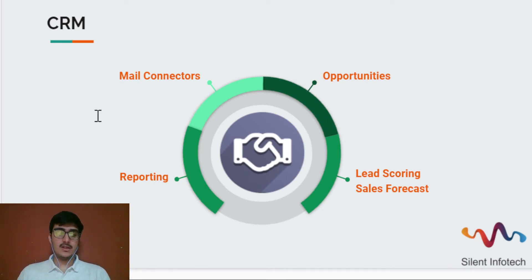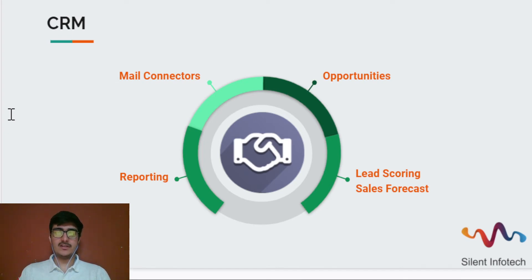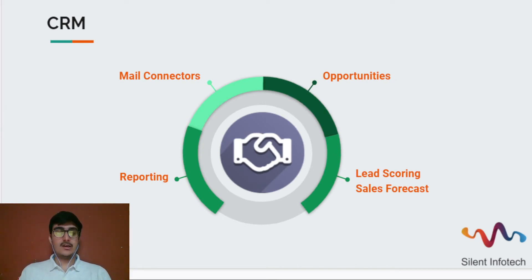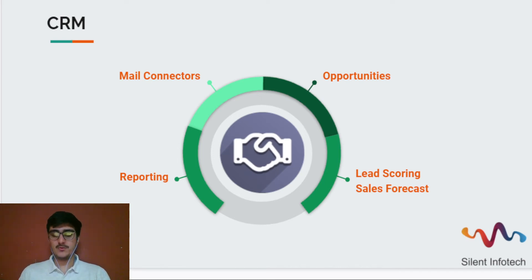Duplicate leads can now get highlighted, so if there is redundancy in leads — multiple same leads created by different salespersons or customers providing data multiple times — they get highlighted. They have also improved the lead scoring and sales forecast, and custom reporting for users has been implemented based on the access rights of the particular user.